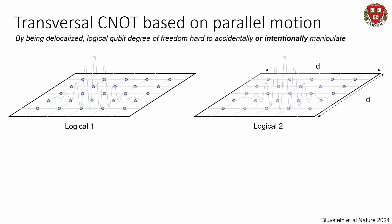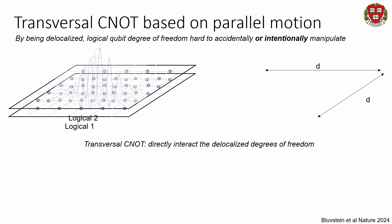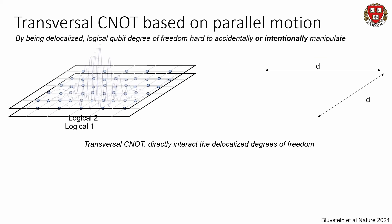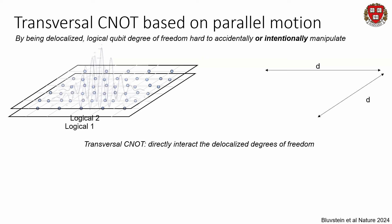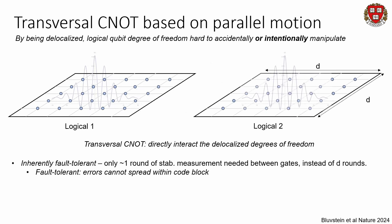This transversal entangling gate, or transversal CNOT, is really central. The way quantum error correction works is we take a logical qubit and hide it by delocalizing it across many individual physical qubits. But when we have two logical qubits next to each other and we're trying to interact them through a boundary, it's very challenging because they're both delocalized independently. But if we can move the atoms and put them right on top of each other, we can do this transversal gate and directly interact these underlying degrees of freedom while they're still protected, by just doing a single global pulse of our Rydberg laser.